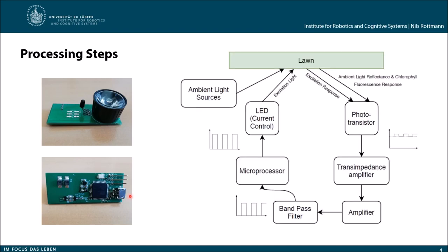The signal path and processing steps are the following. We start with the microprocessor, and the microprocessor uses the PWM signal for controlling the LED, which is a current control loop basically.